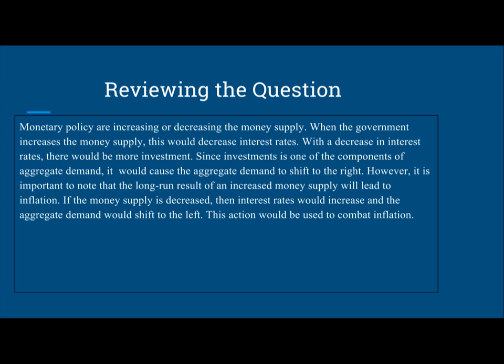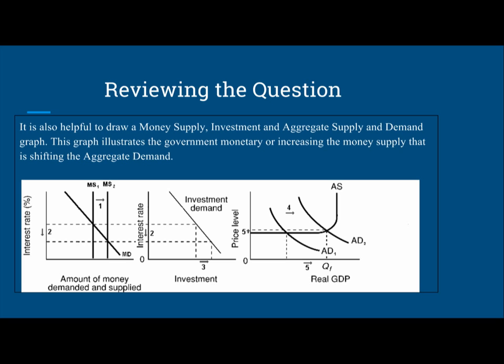If the money supply is decreased, then the interest rates would increase and the aggregate demand would shift to the left. This type of action would be used to combat inflation. It's also helpful to draw money supply, investment, and aggregate supply and demand graphs. These graphs illustrate the government monetary policy of increasing the money supply that is shifting the aggregate demand. You can see that the increase in money supply is thus increasing investments, and increasing investments leads to a shift of the aggregate demand to the right.